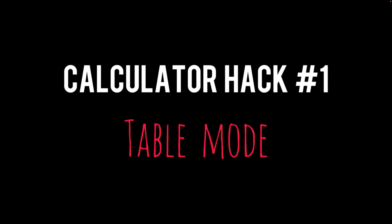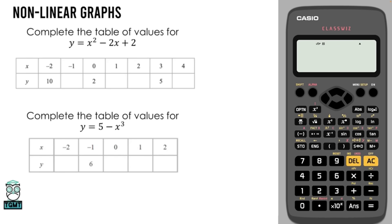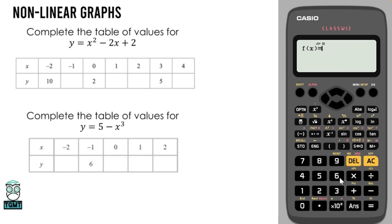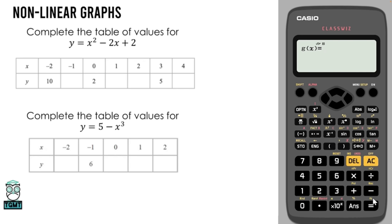Looking at our first hack, we have table mode. For the first question we're going to have a look at, we are going to be using what we call table mode. If we go into our menu and click 3, we can then access table mode. From here we can type in the equation given in a question for a graph we are looking to draw. Press alpha and the right bracket to access the x button, typing it in as we can see there.